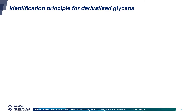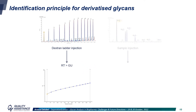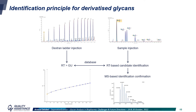The identification principle is as follows: first, you inject a dextran ladder in your LC conditions to calibrate your system and convert the retention time into glucose units, or GU. Then you inject your sample, and based on the GU value, candidates are proposed for each glycan; this identification is confirmed by MS data. Databases are now available for different labelling reagents.